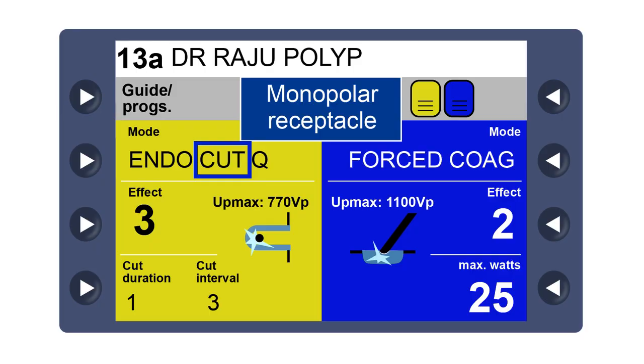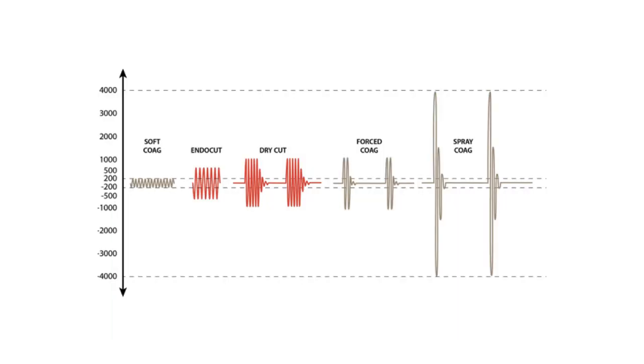Now, let us look at another important feature between the cut and the coagulation in terms of their voltage. So here, soft coagulation is a continuous cycle of less than 200 volts.